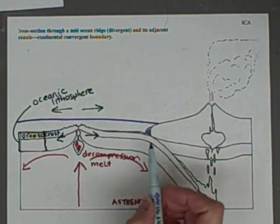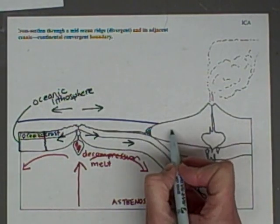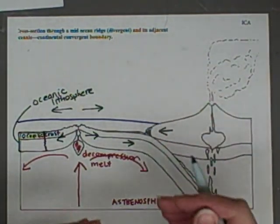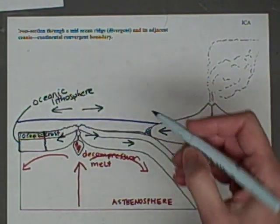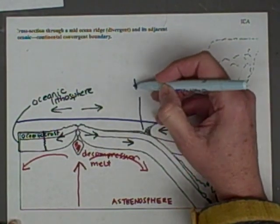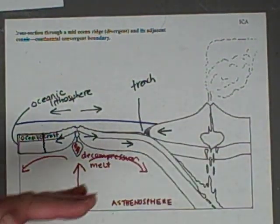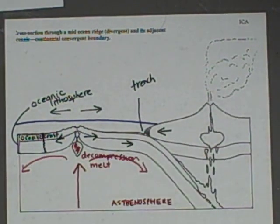Alright, as we move over here, you can see that this plate is moving in that direction. This plate is actually moving in that direction. So that is my collision zone. Now right here, I'm going to have my trench, because where the oceanic plate is forced back under is where we're going to have an oceanic trench.